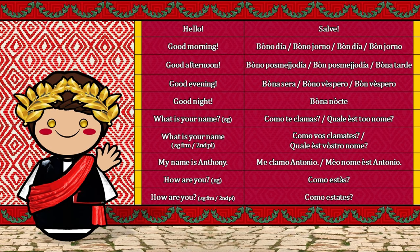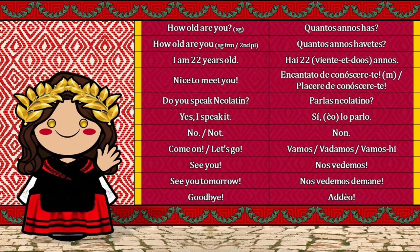Como te clamas? Quale è tuo nome? Como vos clamates? Quale è vostro nome? Me clamo Antonio. Meo nome è Antonio. Come stas? Come state? Quantos anni has? Quantos anni avete? Hai viente e dos anni. Encantato de conoscere te. Placere de conoscere te.